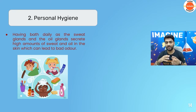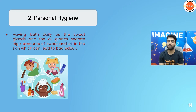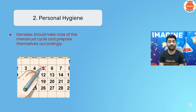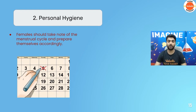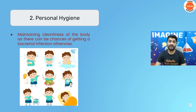Personal hygiene is very important. During this age, your body's oil and sweat glands are very active, so it is very important that you bathe every day to avoid body odor and to prevent bacteria and germs from accumulating. Females should keep track of their menstrual cycle and change sanitary pads after every few hours — even if the pad is not fully used — to maintain intimate hygiene. Boys should also clean their genital areas thoroughly every day while bathing, as that area accumulates a lot of sweat and can develop fungal or bacterial infections. Cleanliness of the entire body is essential to avoid bacterial infection.